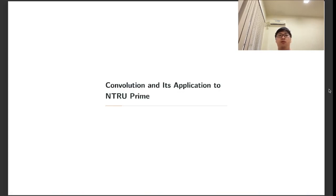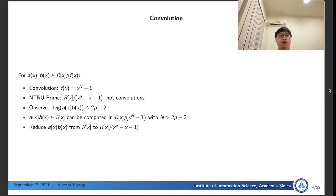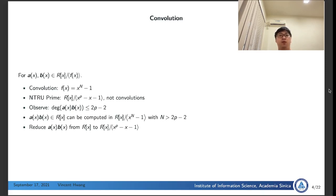Now I'm going to talk about what convolution is and how to apply convolution to multiplying polynomials in N-True Prime. For a polynomial ring, if the polynomial modulus f(x) is equal to x^n minus one for some n, then we call multiplication in this polynomial ring a convolution. If we look at the polynomial modulus of N-True Prime, then multiplications in this ring are clearly not convolutions. We observe that the degree of the product a and b is bounded by 2p-2. Therefore, we can choose an n greater than 2p-2 and compute the product as a size-n convolution. After computing the product, we then reduce the polynomial modulus to x^p minus x minus one.